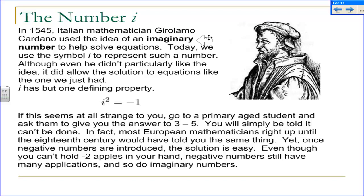Today we would represent this number with the symbol i. If we're going to introduce a number, we're going to have to give it some properties to define it. Other than the properties you'd normally associate with familiar numbers, i actually only has one new property: when you square it, you get negative one. And this is usually the part where people say, wait a second — how can you square something and get negative one? I can't even picture what that number would be like. Well, I guess that's why it's called an imaginary number.